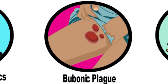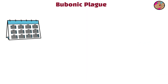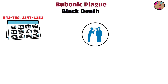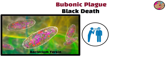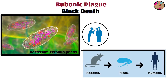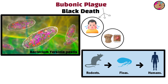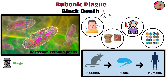Bubonic plague, or the Black Death. The bubonic plague, also known as the Black Death, is a highly infectious disease caused by the bacterium Yersinia pestis. Transmitted by infected fleas from rodents to humans, it causes swollen, painful lymph nodes, buboes, fever, and eventual sepsis.